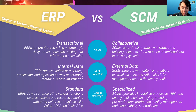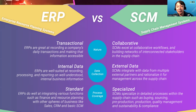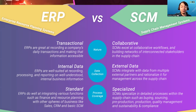Lastly, for process coverage: ERP is more of a standard model, whereas SCM is more specialized. Supply chain management is specialized in detailed processes within the supply chain, such as logistics, sourcing, production, quality management, sustainability, and compliance.